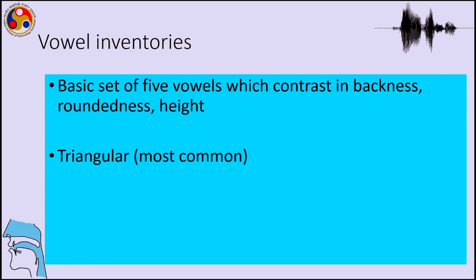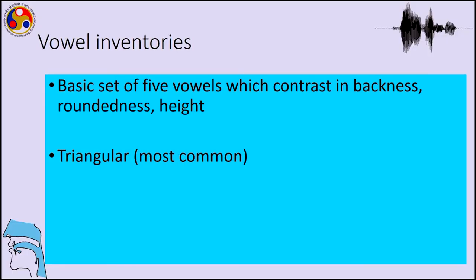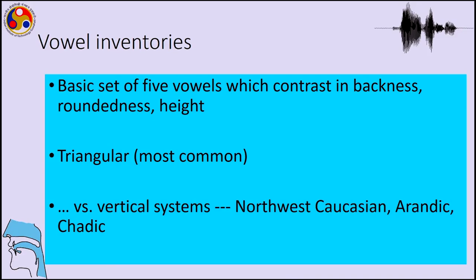Coming now to vowel inventories. We have finished discussing most aspects of consonants: place of articulation, manner of articulation, airstream mechanism, direction of airstream, nasality, and lateral versus central aspects of sound. Looking at vowel inventories, we recall the triangular shape discussed when we talked about cardinal vowels — the outer edges have the most common vowels in the world's languages. The triangular shape is most common, with the two high corners being front 'ee' and back 'oo', and the low corner being 'a'.